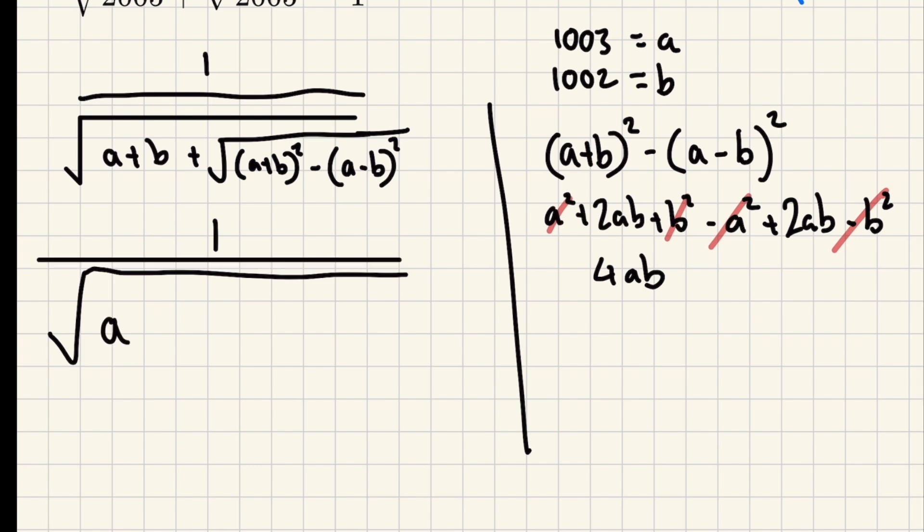So that means that we can put this whole thing on a slightly easier footing, and it's going to be 1 over square root of a plus b, plus the square root of 4ab. Now the square root of 4ab is just the same as taking that two out, so let's take the two out of the root.